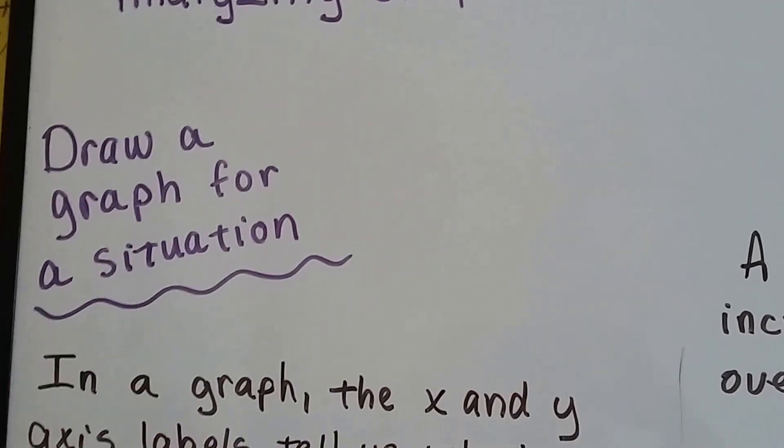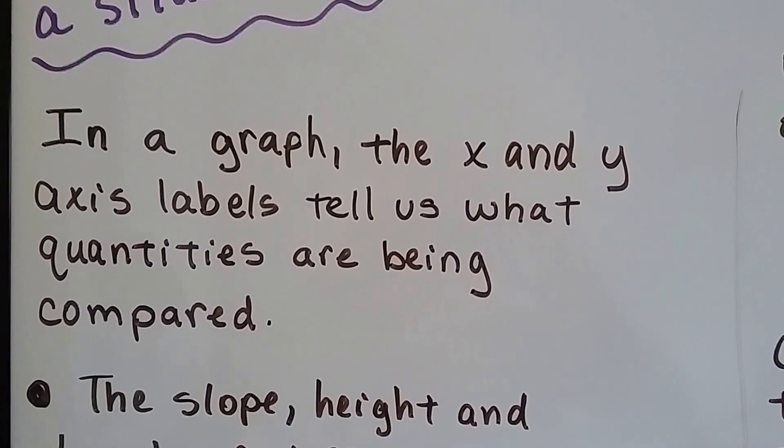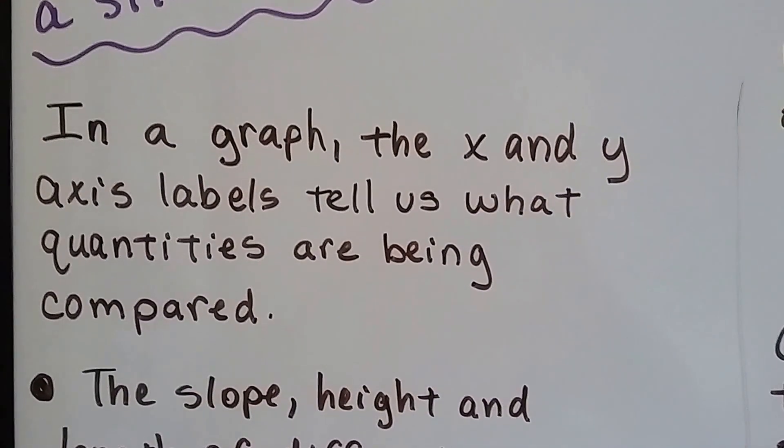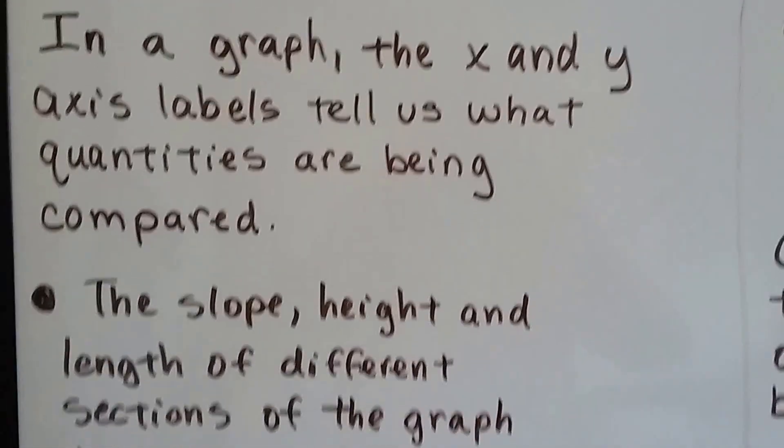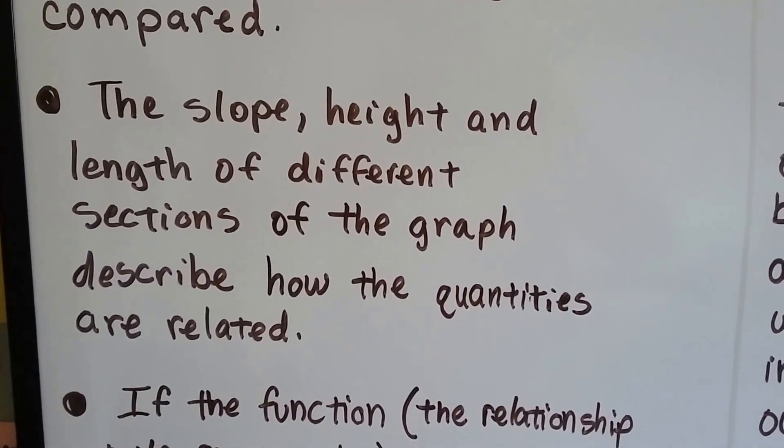I'm going to show you how to draw a graph for a situation. In a graph, the x and y axis labels tell us what quantities are being compared. The slope, height, and length of different sections of the graph describe how the quantities are related.